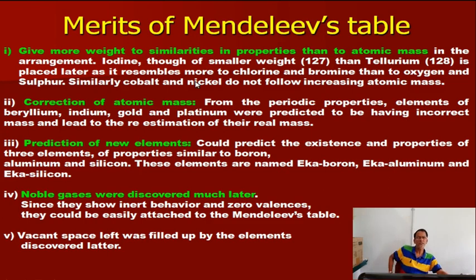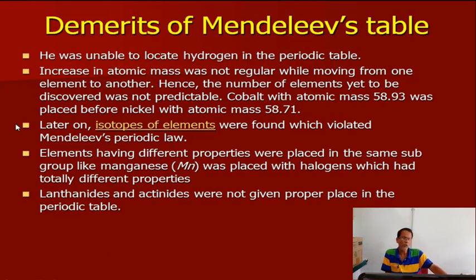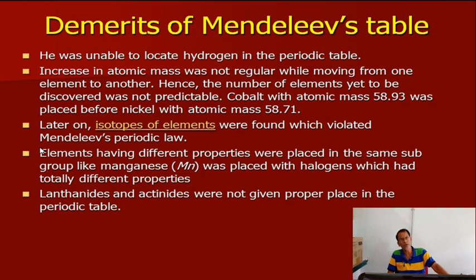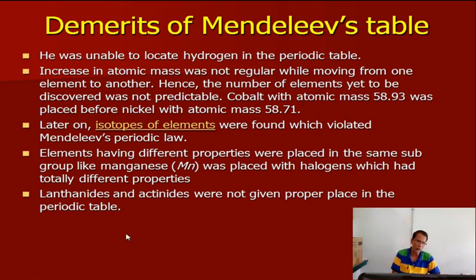The demerits of Mendeleev's table: he was unable to locate hydrogen in the correct position. Atomic mass was not regular in the arrangement — in some cases, lower atomic mass elements appeared later. There was no proper place for isotopes; for example, hydrogen has three isotopes — protium, deuterium, and tritium — and their positions were not mentioned. Elements having different properties were placed in the same group; for example, manganese was placed with halogens, though manganese is a metal and halogens are non-metals. Lanthanides and actinides were not given proper places in the table.